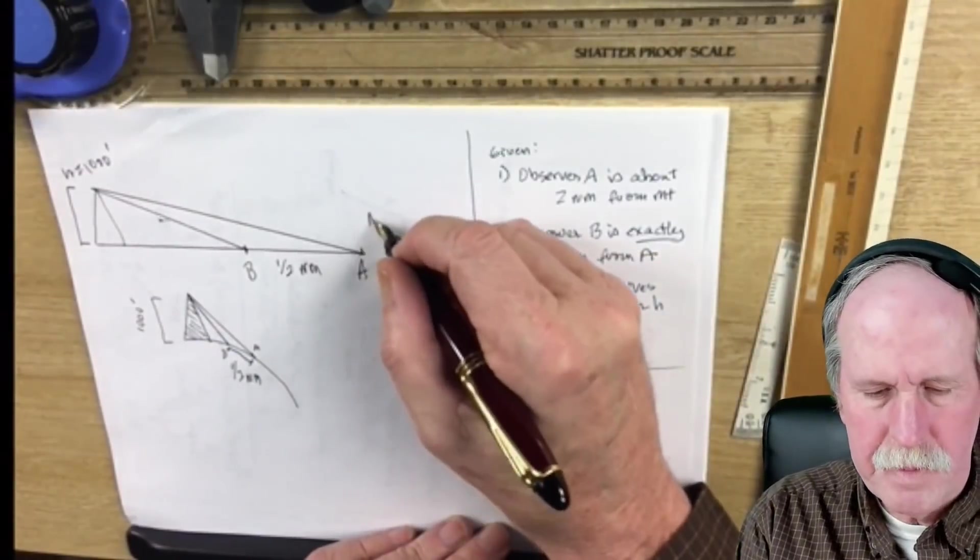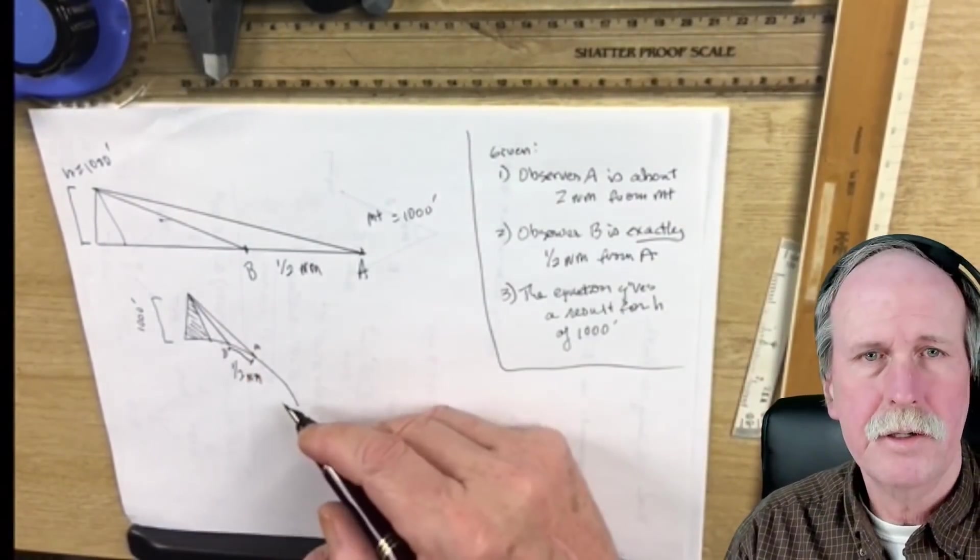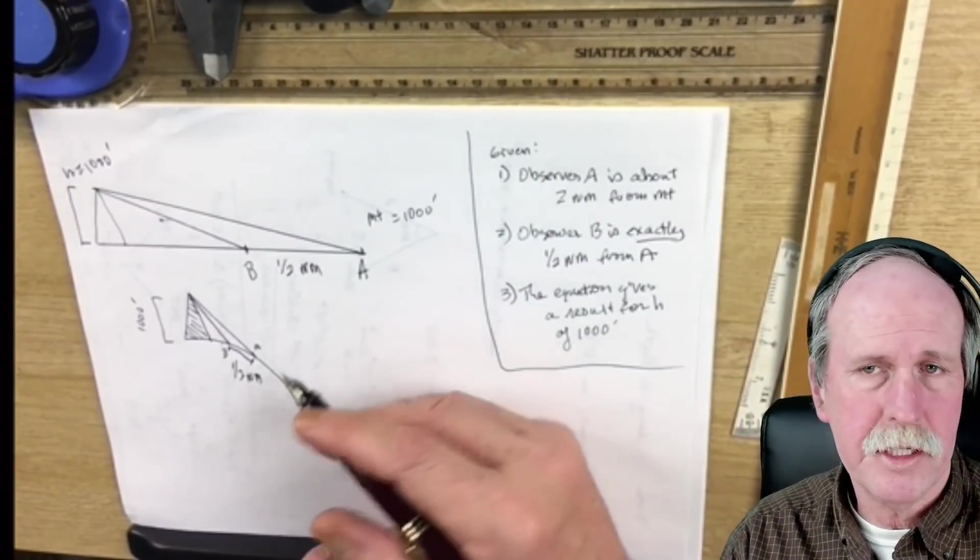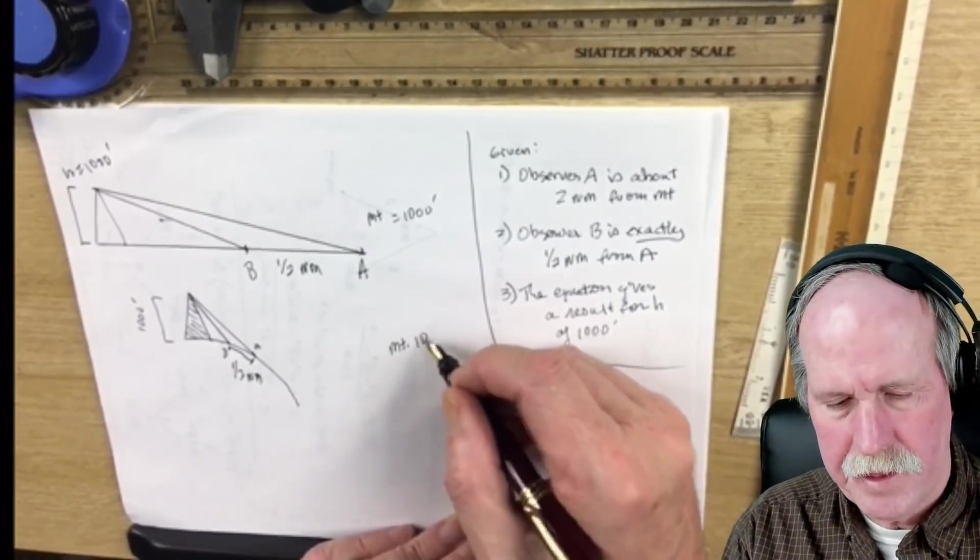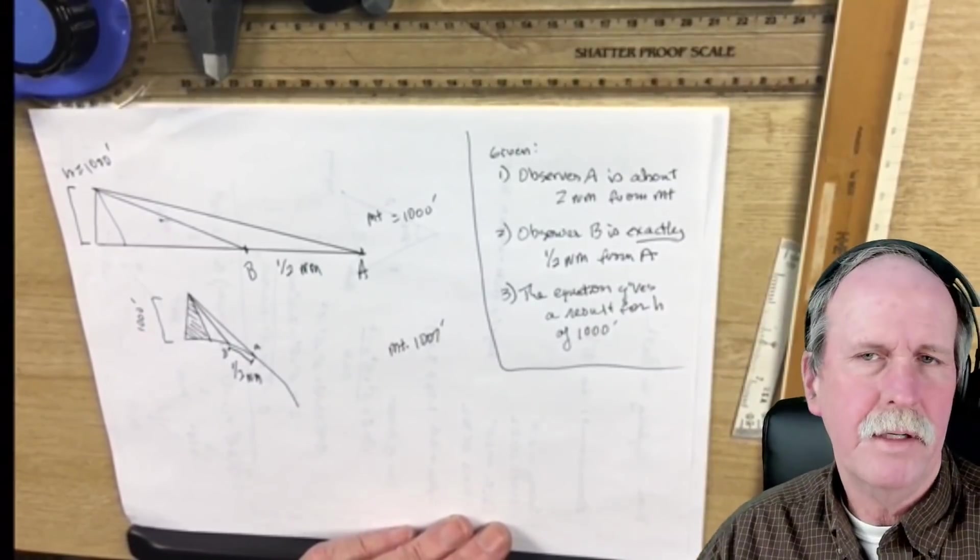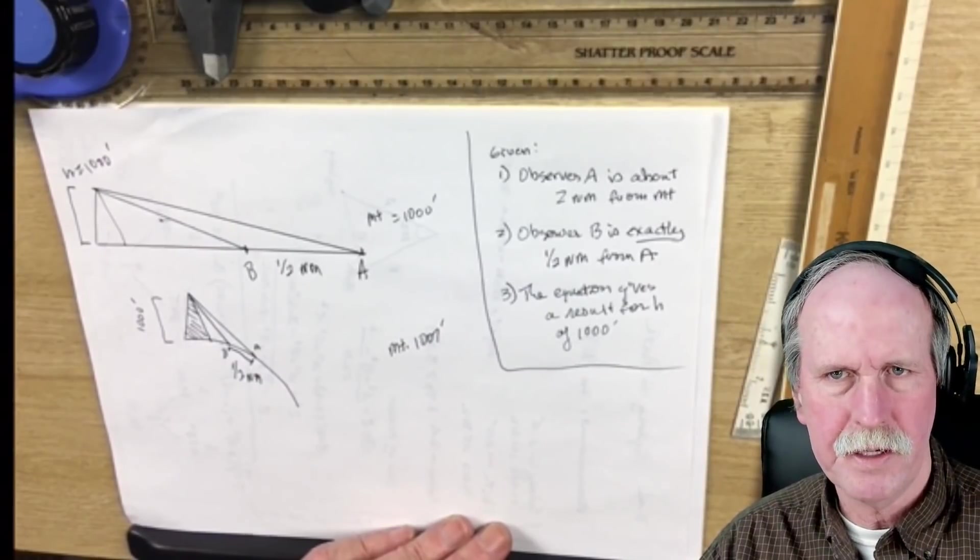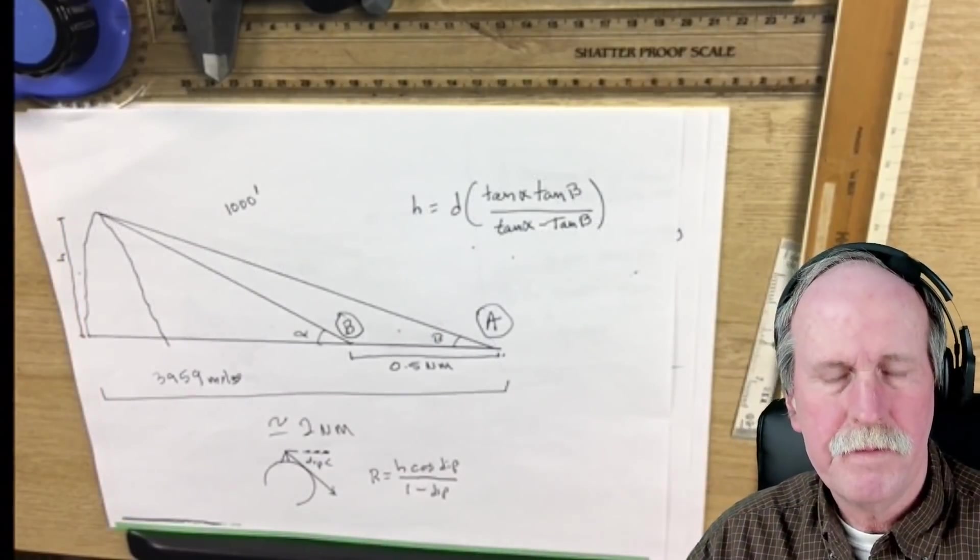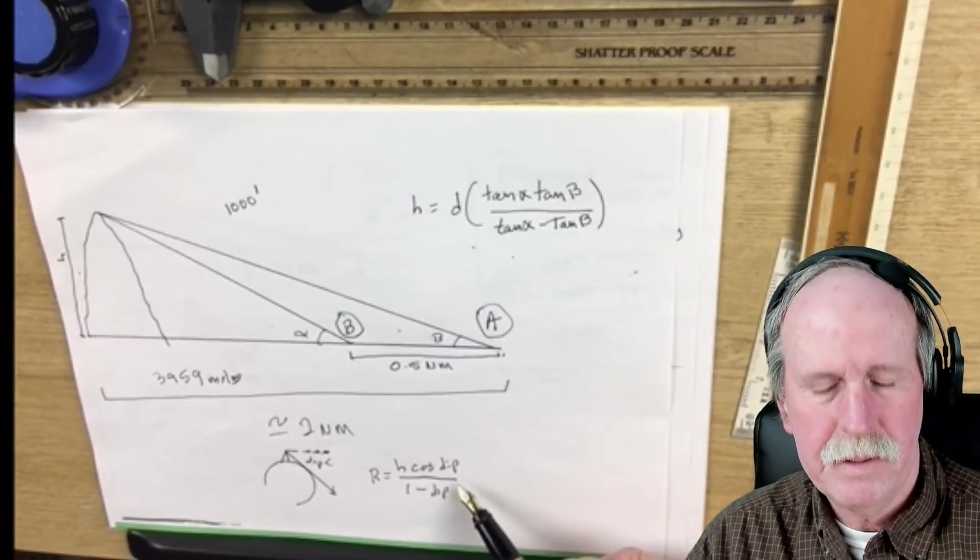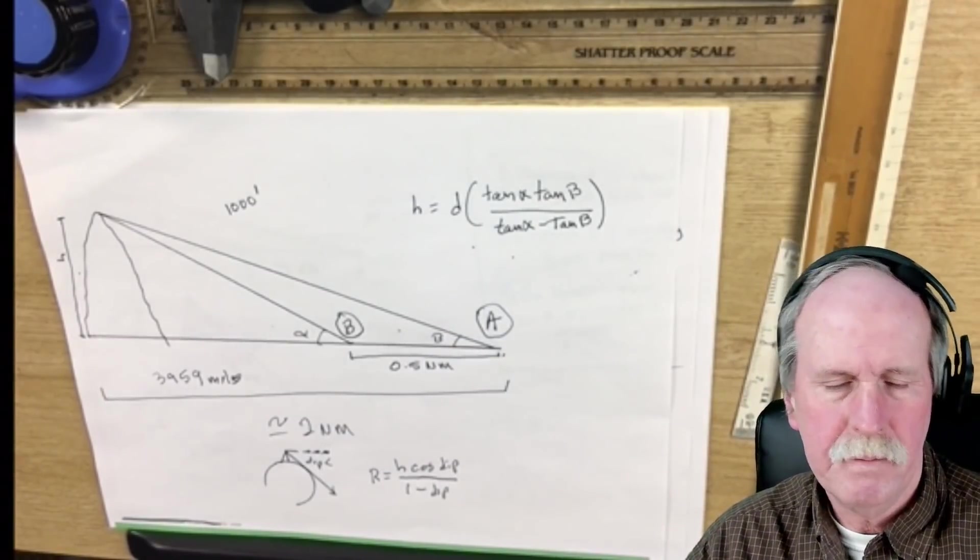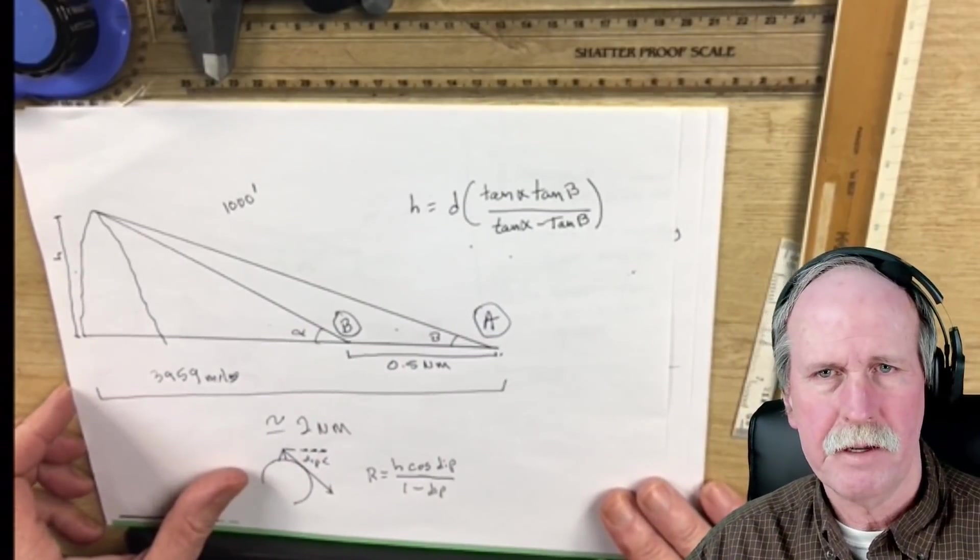So, on the flat earth, the mountain is 1,000 feet high. And on the curved earth, with a radius 3,959, which is the actual curve of the earth, the mountain would, in reality, be 1,007 feet high. Now, let's go ahead and have a look and see how much of a difference this makes in the calculation of the radius of the earth. Recall the formula for the radius of the earth is the height of the mountain times the cosine of that dip angle over 1 minus the cosine of the dip angle. Well, what's the dip angle going to be?